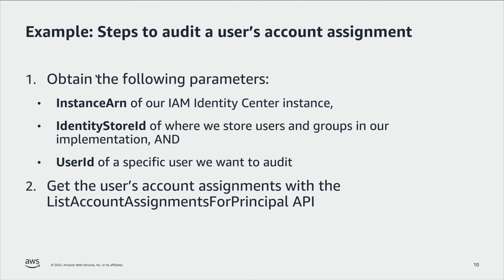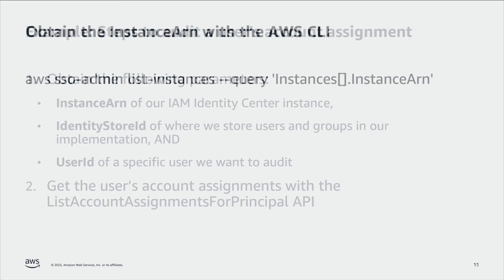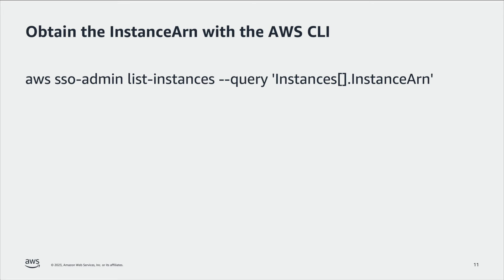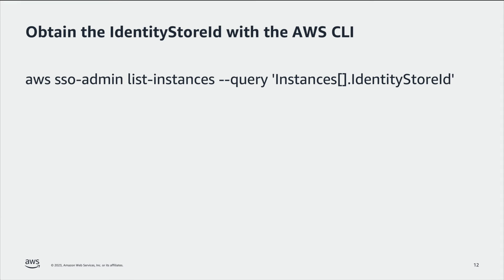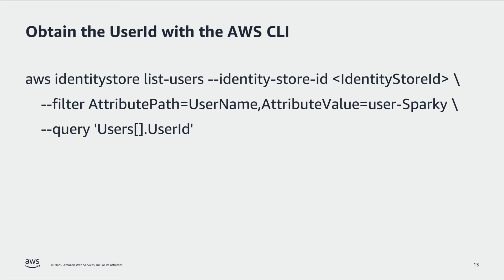For the sake of clarity, we'll focus on how to do this with the AWS CLI. We will audit the assignment of a user named UserSparky. First, we need to get the instance ARN of our IAM Identity Center instance, and we use the SSO Admin API to do so. We use the query option to get the instance ARN and exclude the rest of the instance data. Next, we get the identity store ID. Similar to the previous command, we query for the identity store ID and exclude other instance data. Then we get the user ID from the username using the identity store ID from the previous step.